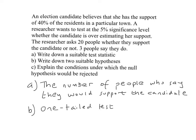So we're going to write down two suitable hypotheses. One is called the null hypothesis, denoted H₀. The null hypothesis is the 'nothing has changed' hypothesis — that the probability people are going to vote for this candidate is 0.4, i.e., 40%.